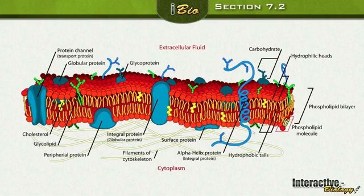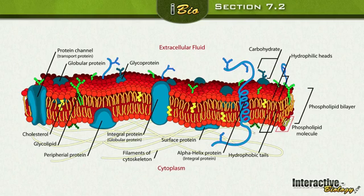The other proteins and carbohydrates on the external surface help with identification — so that your body can know what type of cell it is and what type of cells certain other cells are coming into contact with. That's also how your body can determine when there's a foreign substance inside, because when it sees foreign IDs it knows it needs to attack those cells.